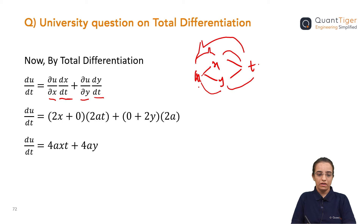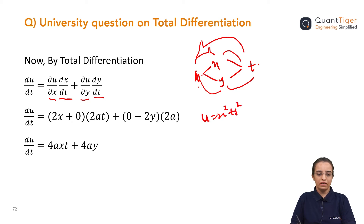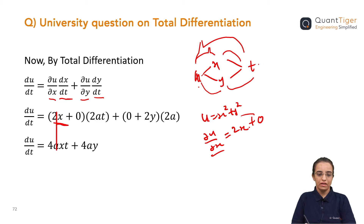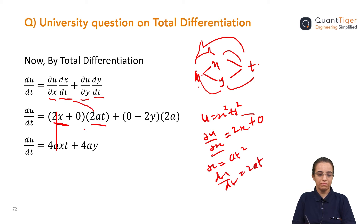Now, u is given as x squared plus y squared. If we find del u by del x — differentiating with respect to x — it will be 2x, and the y squared derivative will be 0, since y is treated as constant. Now since x is given as at squared, dx by dt will be 2at, which I have kept here as the value of dx by dt.